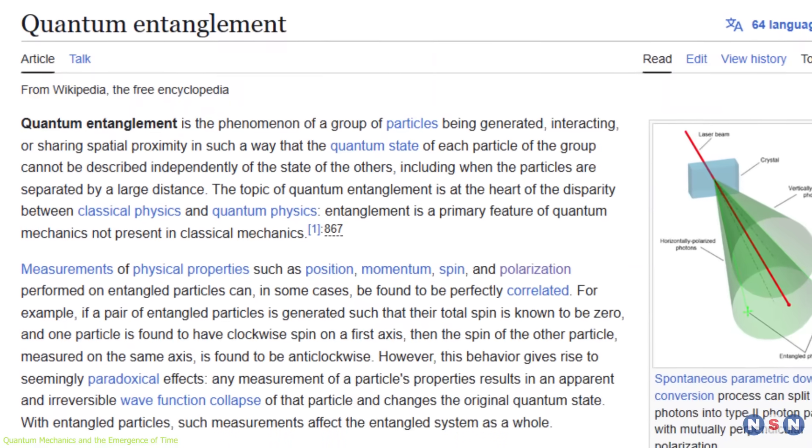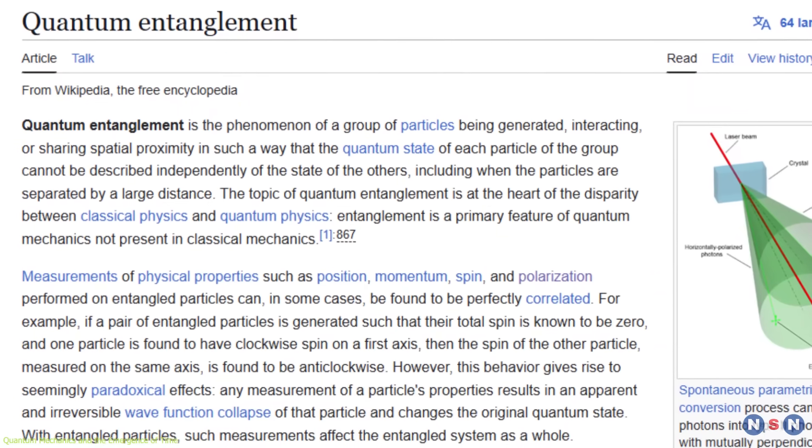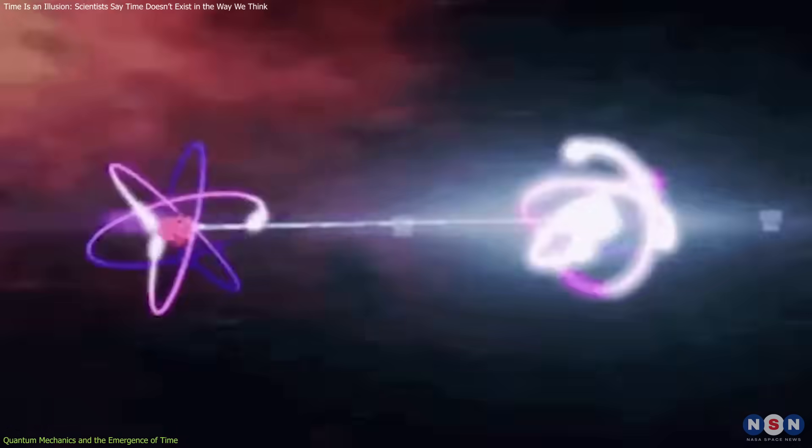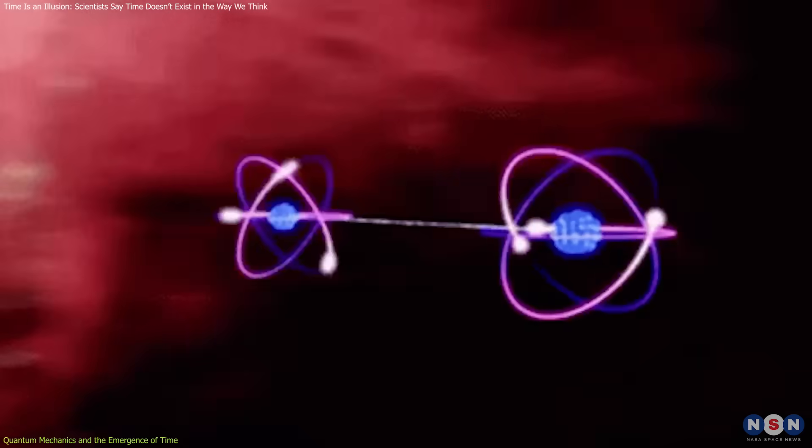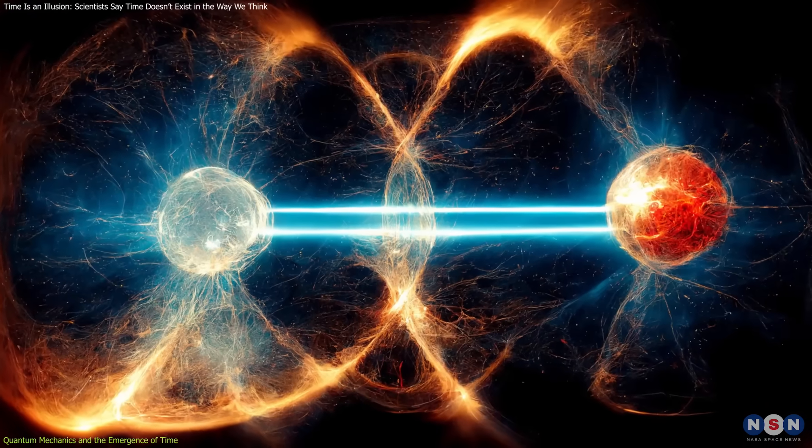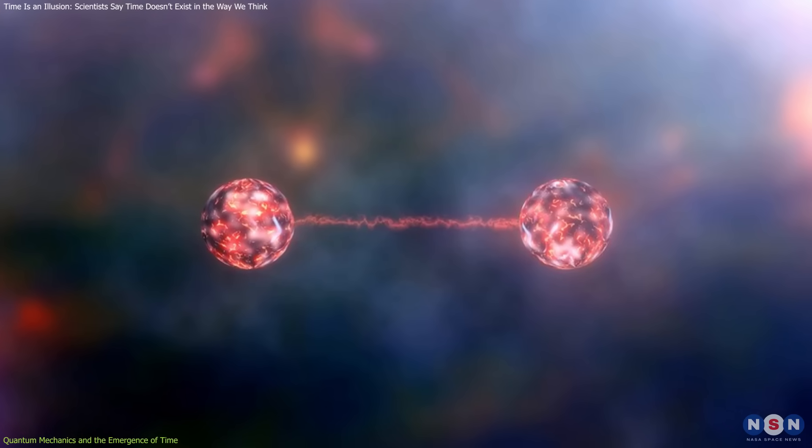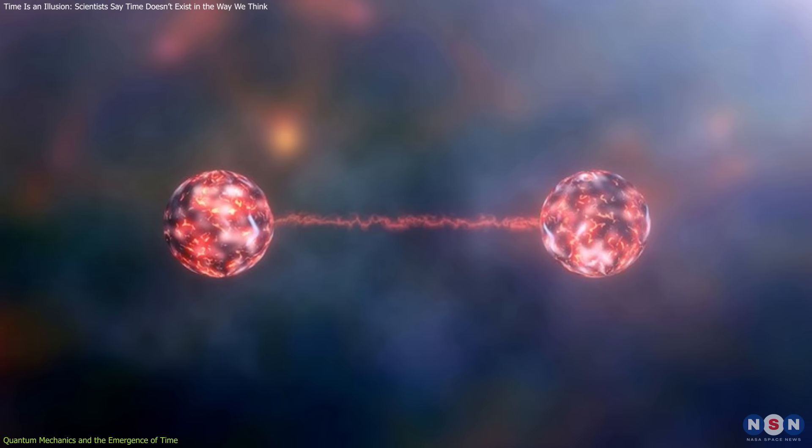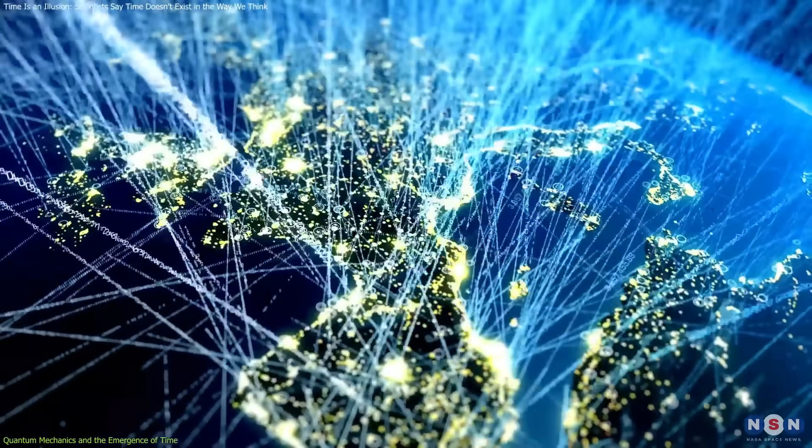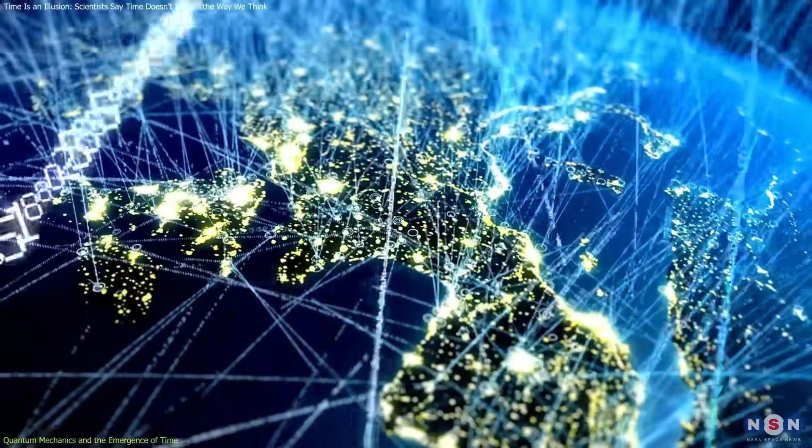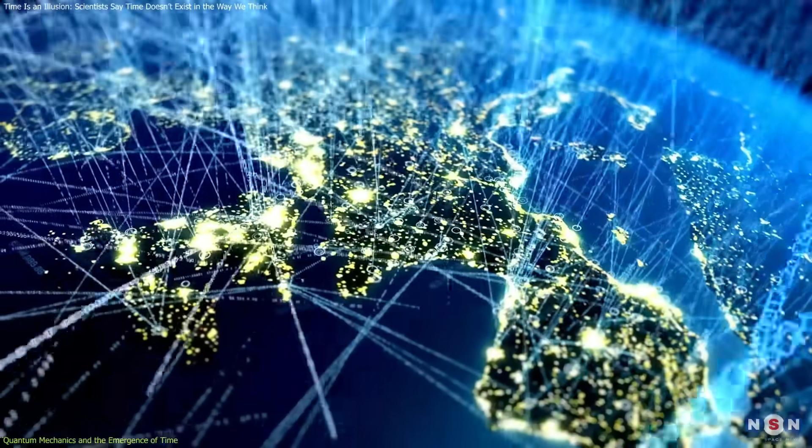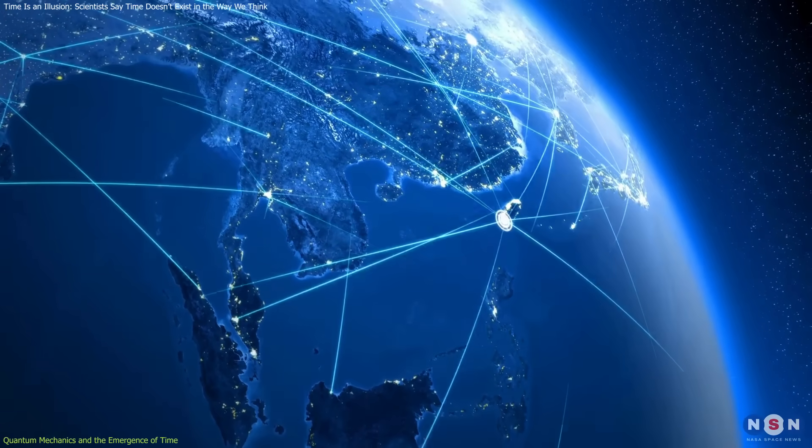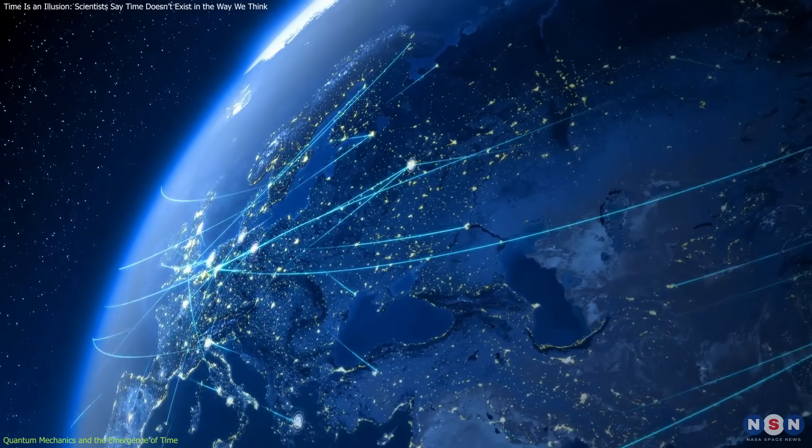One of the most intriguing phenomena in quantum mechanics is entanglement, where particles become so deeply connected that the state of one instantaneously influences the state of another, regardless of the distance separating them. This spooky action at a distance, as Einstein called it, has been experimentally confirmed and suggests that information can be correlated across vast expanses without any time delay. Such instantaneous connections challenge the classical notion of causality, which relies on a temporal sequence of cause and effect.